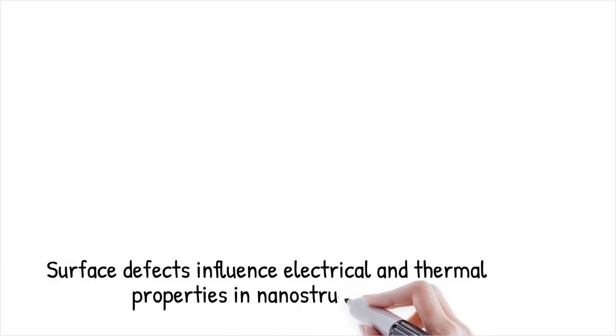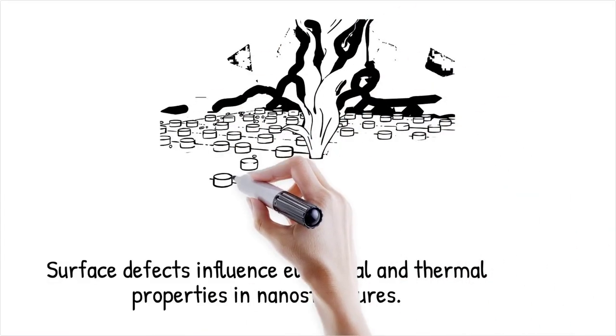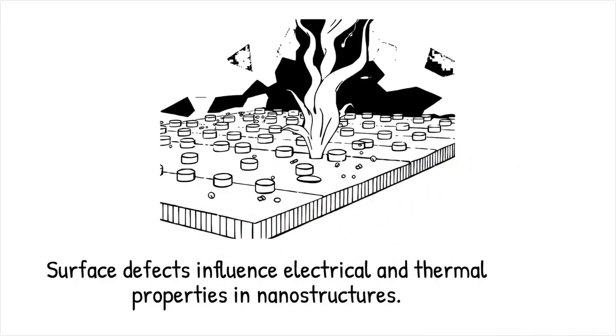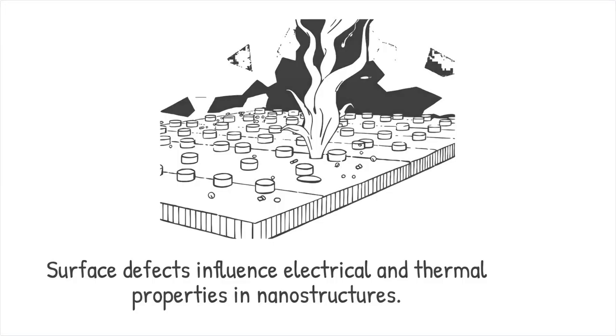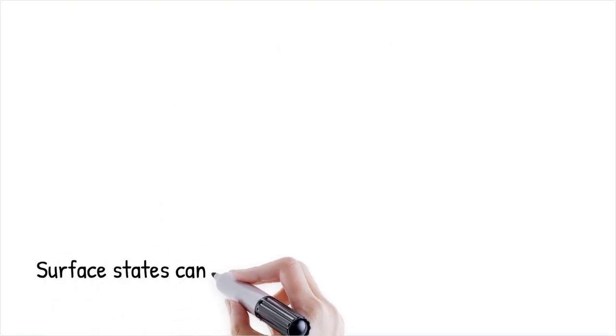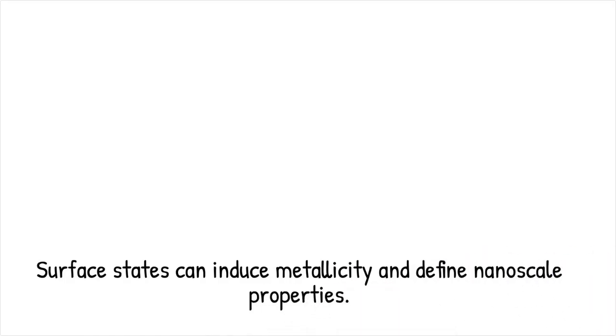Surface defects, dangling bonds, and adsorbed species create localized electronic states that can trap charge carriers or scatter phonons, modifying electrical resistance and thermal conductivity. Nanostructures often exhibit suppressed thermal transport as phonons scatter at boundaries, making them effective thermoelectric materials.